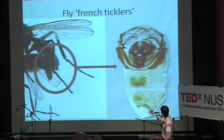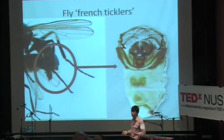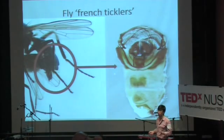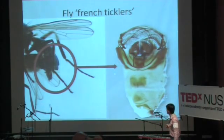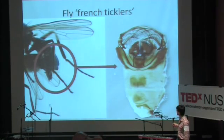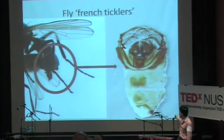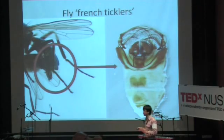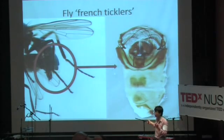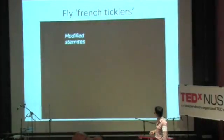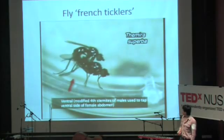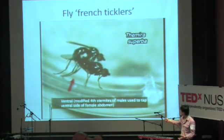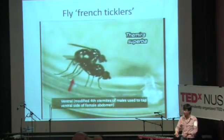This very specialized structure is what we call a sternite brush. On insects, the abdomen is usually covered by hardened plates called sclerites. However, in this particular species of fly, one of the plates has actually evolved into these huge appendage-like structures, basically not seen in any other kinds of insects — only in this kind of fly do we have a complete new set of leg-like structures on the abdomen. These are what I call French ticklers: when mating with the female, he uses the brushes to tap her and stimulate her.